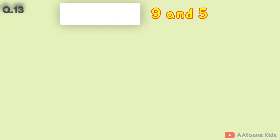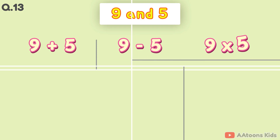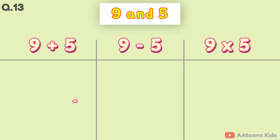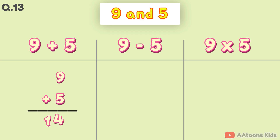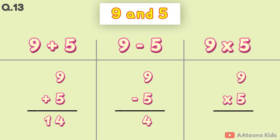The two numbers are 9 and 5. 9 plus 5 is 14. 9 minus 5 is 4. 9 times 5 is 45.